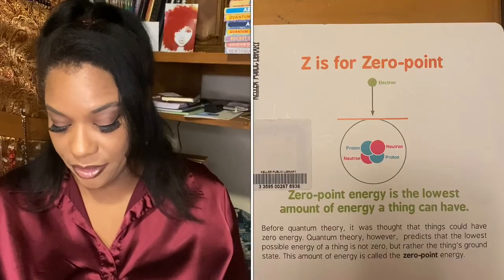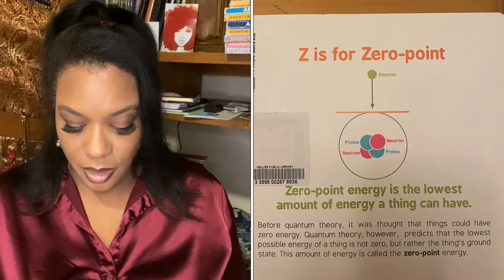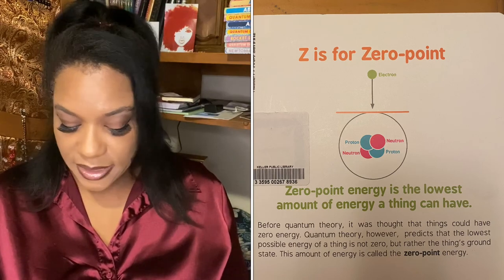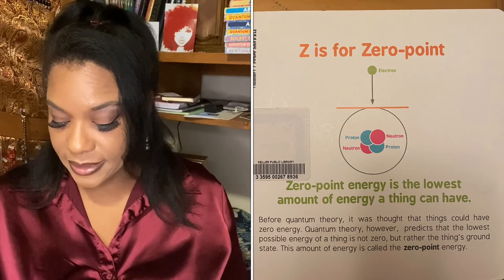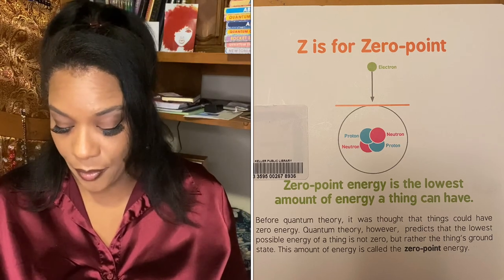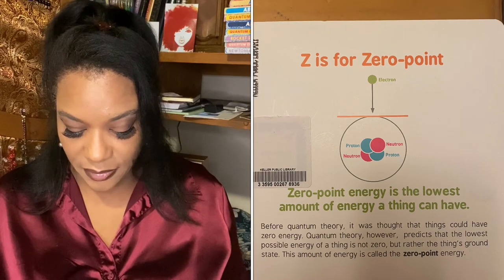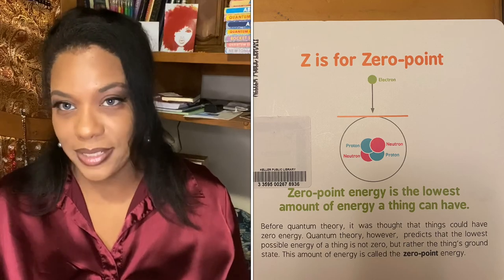Z is for zero point. Zero point energy is the lowest amount of energy a thing can have. Before quantum theory, it was thought that things could have zero energy. Quantum theory, however, predicts that the lowest possible energy of a thing is not zero, but rather the thing's ground state. This amount of energy is called the zero point energy.